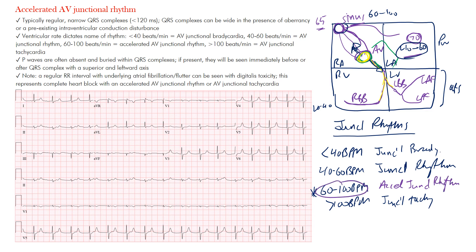We're focusing on the rate between 60 and 100 beats per minute for the accelerated junctional rhythm. It's typically a regular narrow QRS complex unless there's underlying intraventricular conduction delay. The ventricular rate dictates the name. P waves are often absent or buried within the QRS complex; they may occur immediately before or after and can have a changed axis.